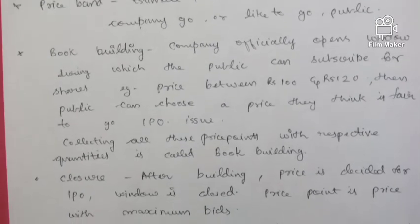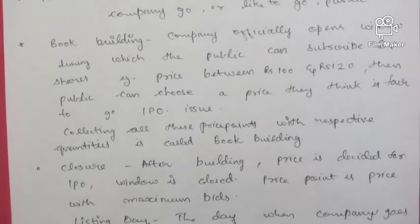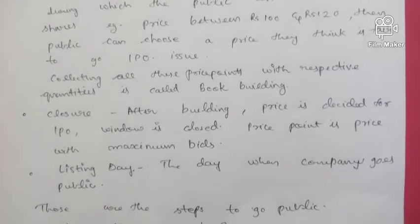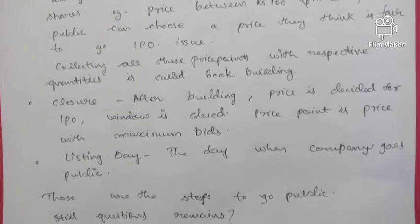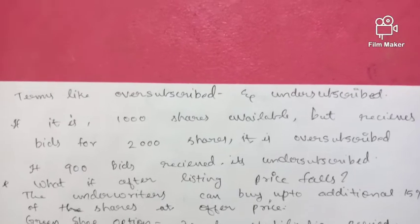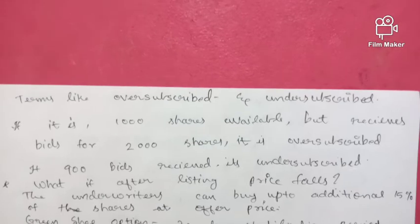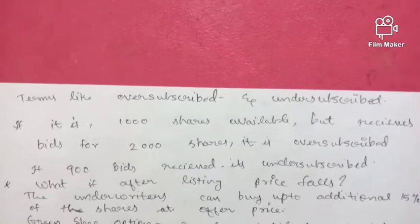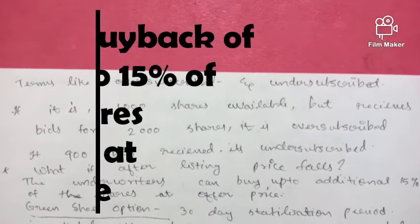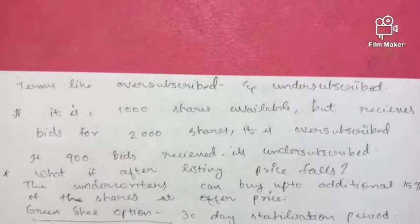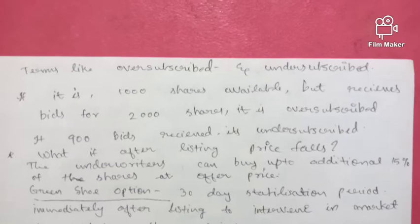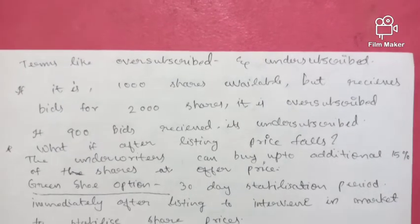The listing day is when the company officially goes public. If a company's 1,000 shares are available but 2,000 bids are received, it is oversubscribed; if only 900 bids are received, it is undersubscribed. If the price falls soon after listing, the underwriters can buy back up to an additional 50% of shares at the offer price — this is known as the green shoe option, a 30-day stabilization period to stabilize share prices after listing.